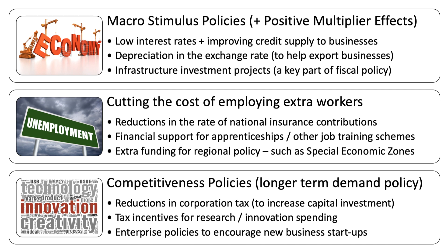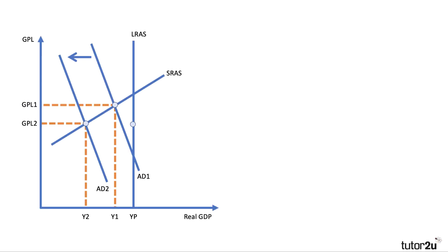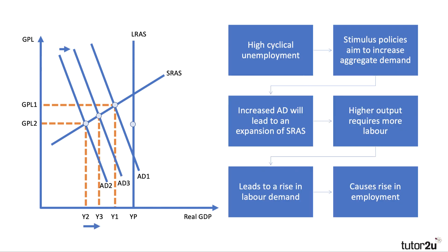Demand-side policies are essentially there to create fresh demand for goods and services. A diagram shows the impact of recession — a fall in the aggregate demand curve causing a negative output gap. A stimulus policy is designed to reverse that process: increasing aggregate demand leads to an expansion of short-run aggregate supply. Higher output nearly always requires more labor, leading to an increase in labor demand, a rise in employment, and hopefully a fall in cyclical unemployment.